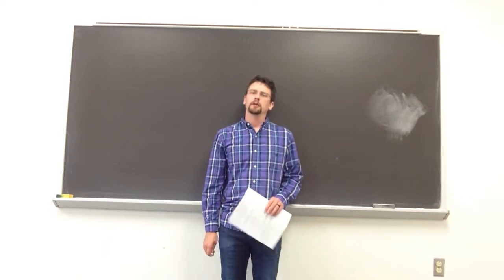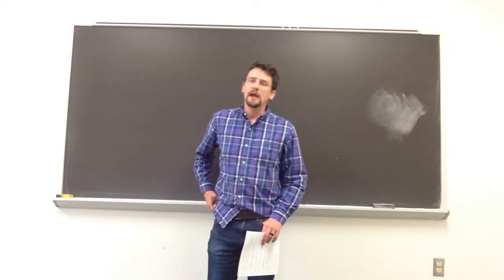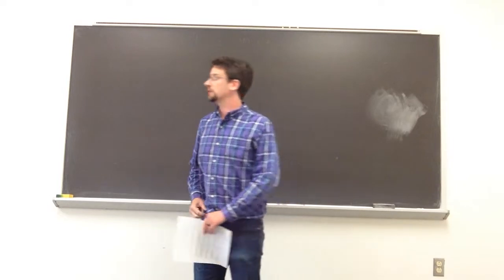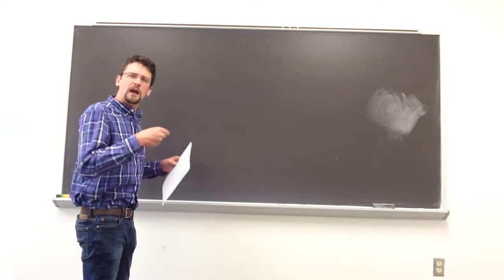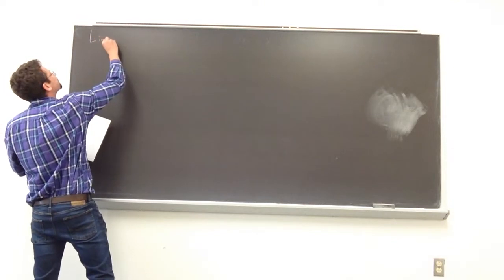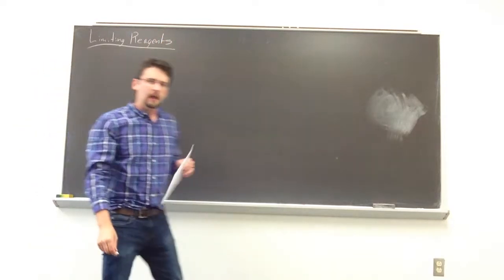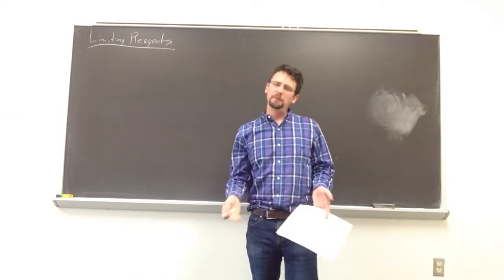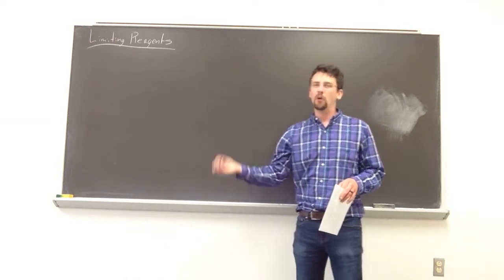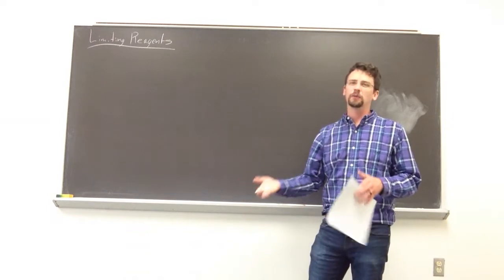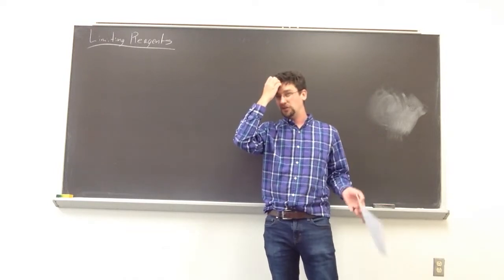Hi, my name is Scott Simpson and today we'll be talking about limiting reagents. In a chemical reaction, eventually one of the reactants will run out and the reaction stops — it goes to completion. We want to be able to predict how this chemical reaction will occur, how much product we'll get. If we know how much of each reactant we have, we want to predict how much product we'll get, or if a reactant is very costly, we need to figure out exactly how much we'll need.